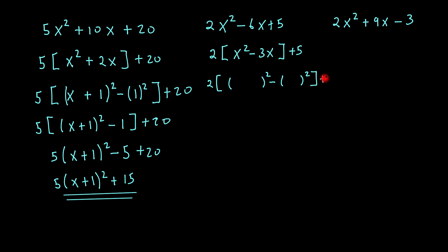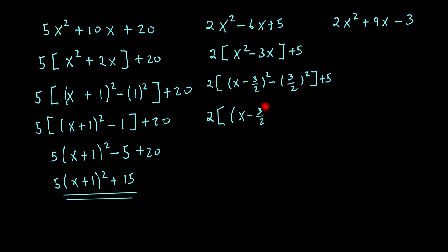That would be plus 5. So bring my x down, bring the sign down which is a negative, now I half the 3 — in other words, it will be 3 over 2, divide it by 2 — and this would be 3 over 2 all squared. So the next part would be 2 times x minus 3 over 2 all squared. Now I square this — that's 9 over 4 — plus 5.